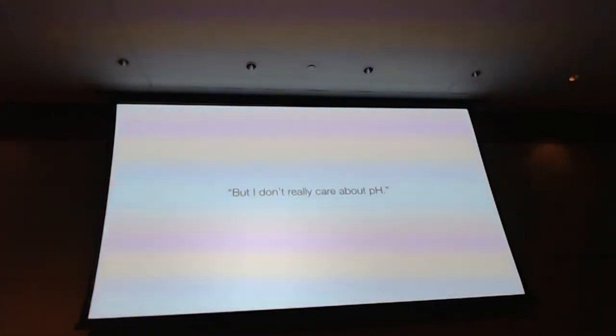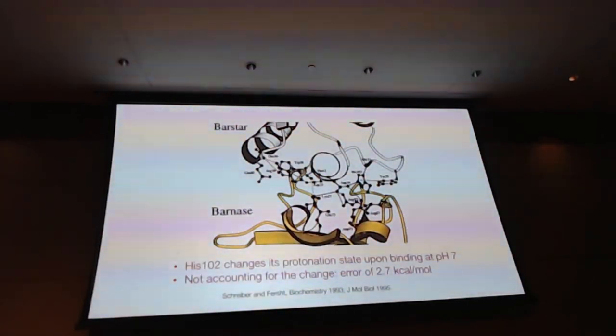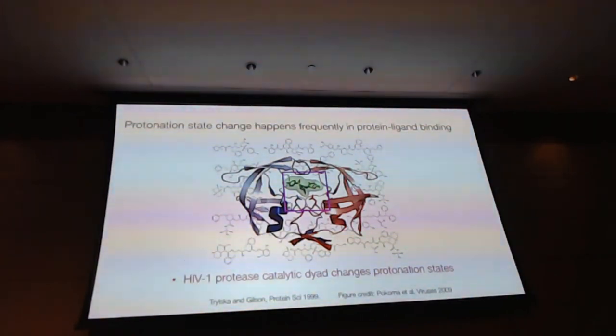So that's the illustration of pH effect. But many people would say, but I don't care about pH. So here's an example that doesn't say anything about pH because all we want to do is study the binding free energy of the system. And we're asking the question, what is the binding free energy at pH 7? That's what most of you are interested in. And it turns out, in this case, histidine 102 changes its protonation state upon binding, and therefore, by not accounting for this change in protonation state, the error would be 2.7 kcal per mole, which is really large.